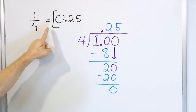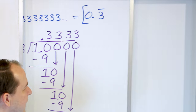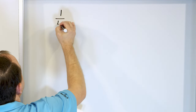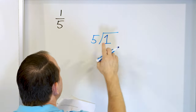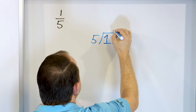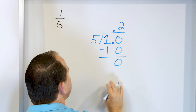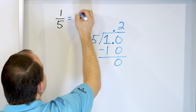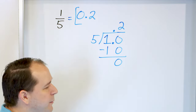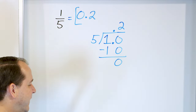Let's look at the fraction one fifth. One divided by five. Can five go into one? No. So we drop our decimal, add a zero, and our decimal goes above. Can five go into 10? Yes — five times two is 10. Multiply 10, subtract: 10 minus 10 is zero. Remainder of zero, so we stop immediately. One fifth is equal to the decimal 0.2. One fourth is 0.25, but one fifth is the exact decimal 0.2.